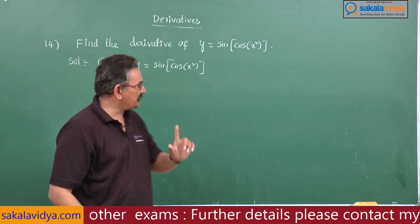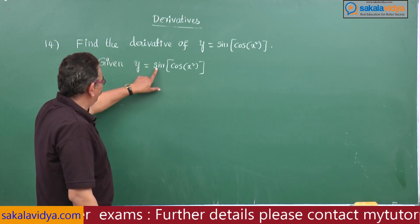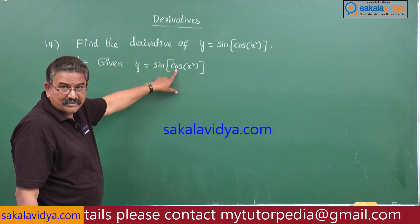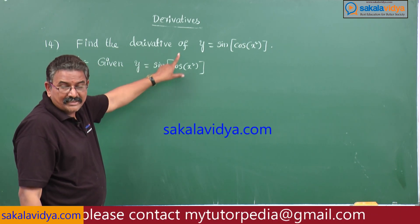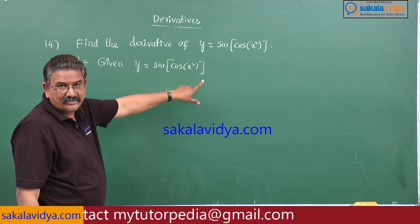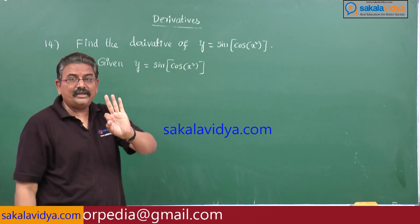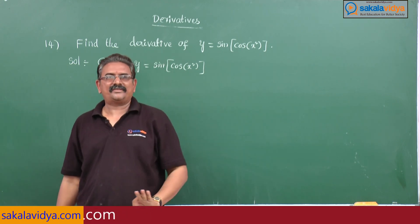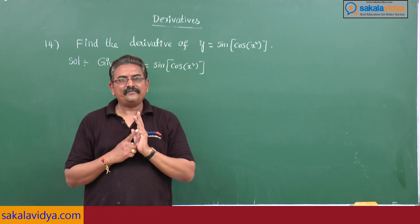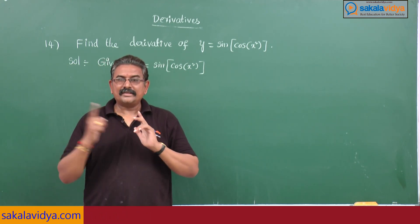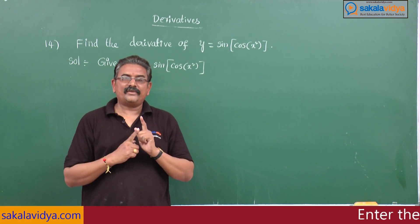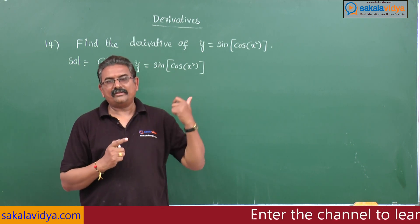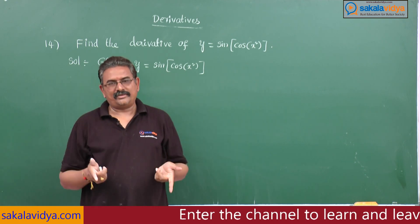The chain rule is a very easy method. What the chain rule means: first find the derivative of sin, next find the derivative of cos, and then find the derivative of x². That means we write the derivatives of three functions — sin x, cos x, and x² — and then easily solve this problem using the chain rule concept.